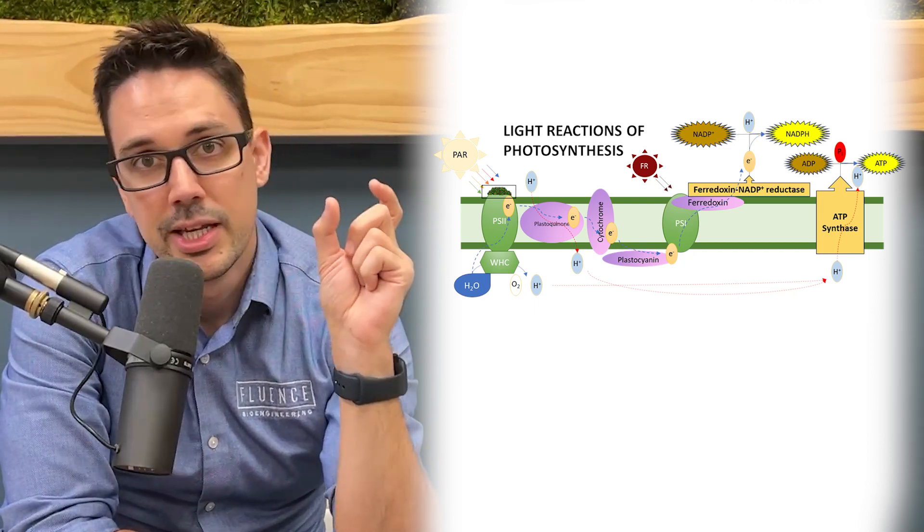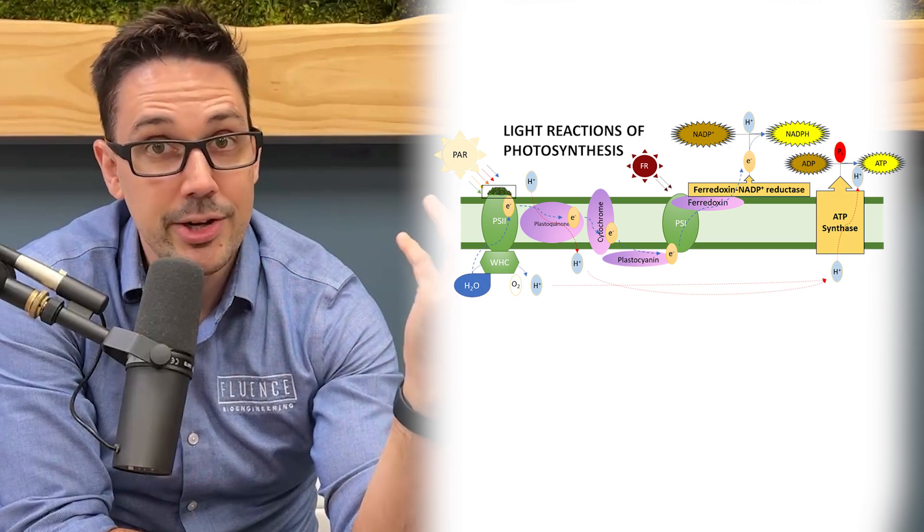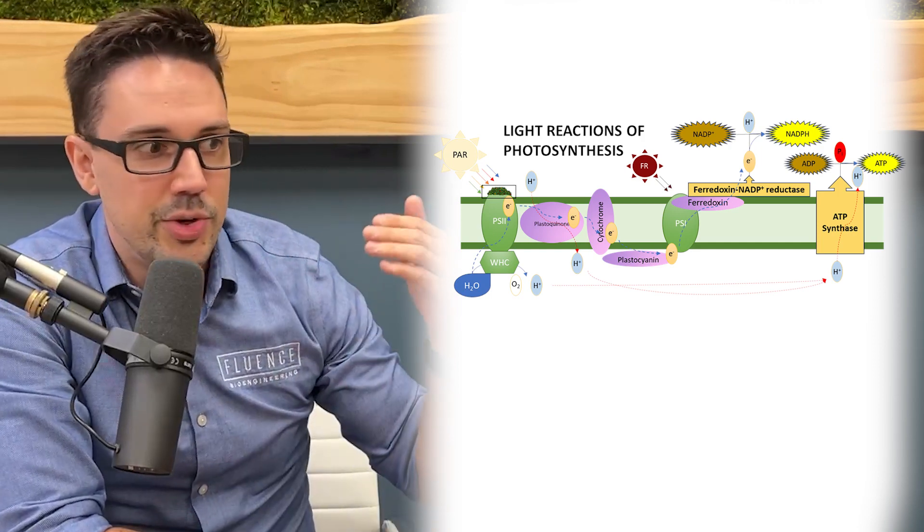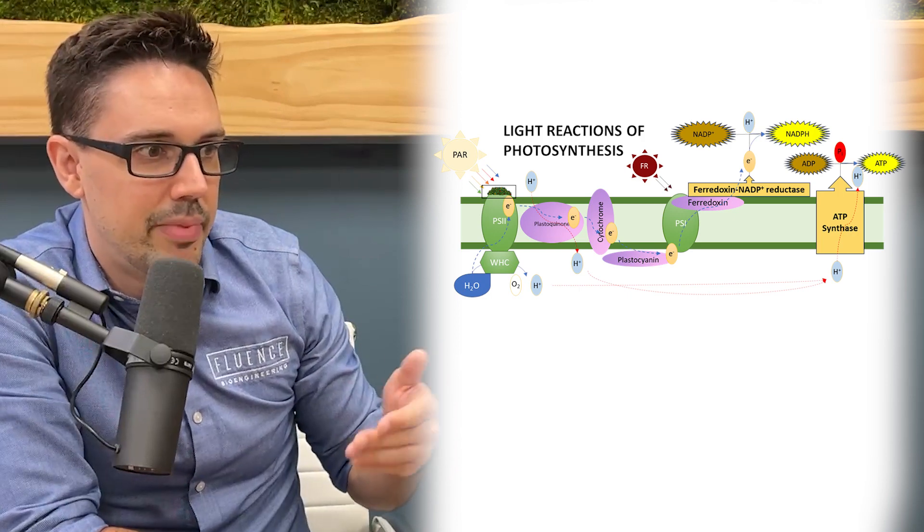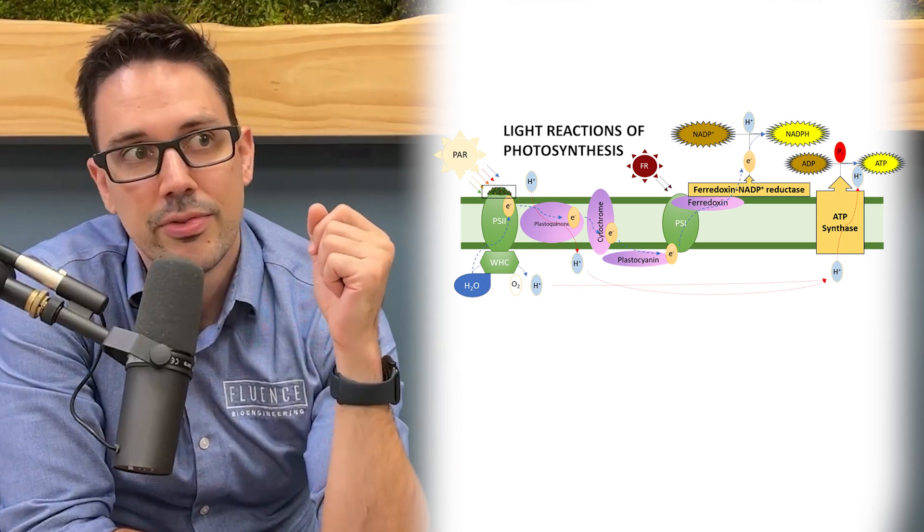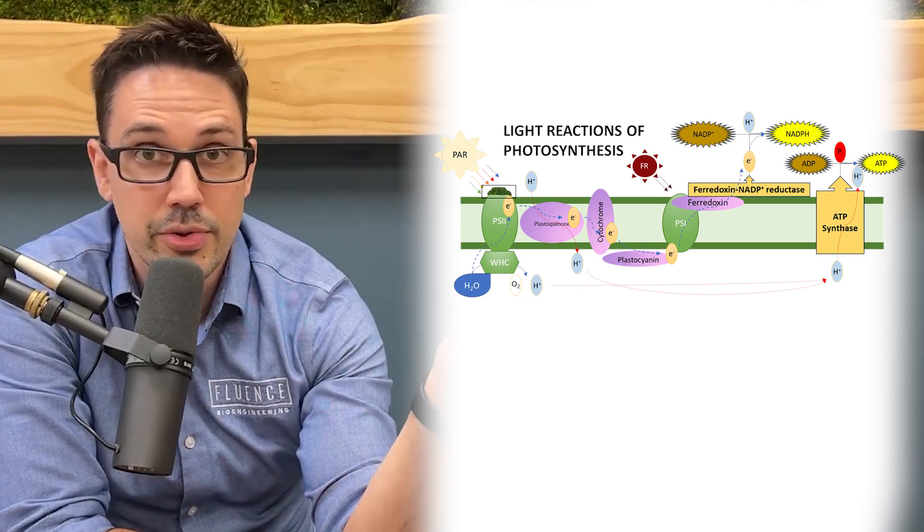NADPH is biochemical energy that can be used to do all kinds of things in plant development. But foremost, it's going to be used in the creation of sugar, of glucose.